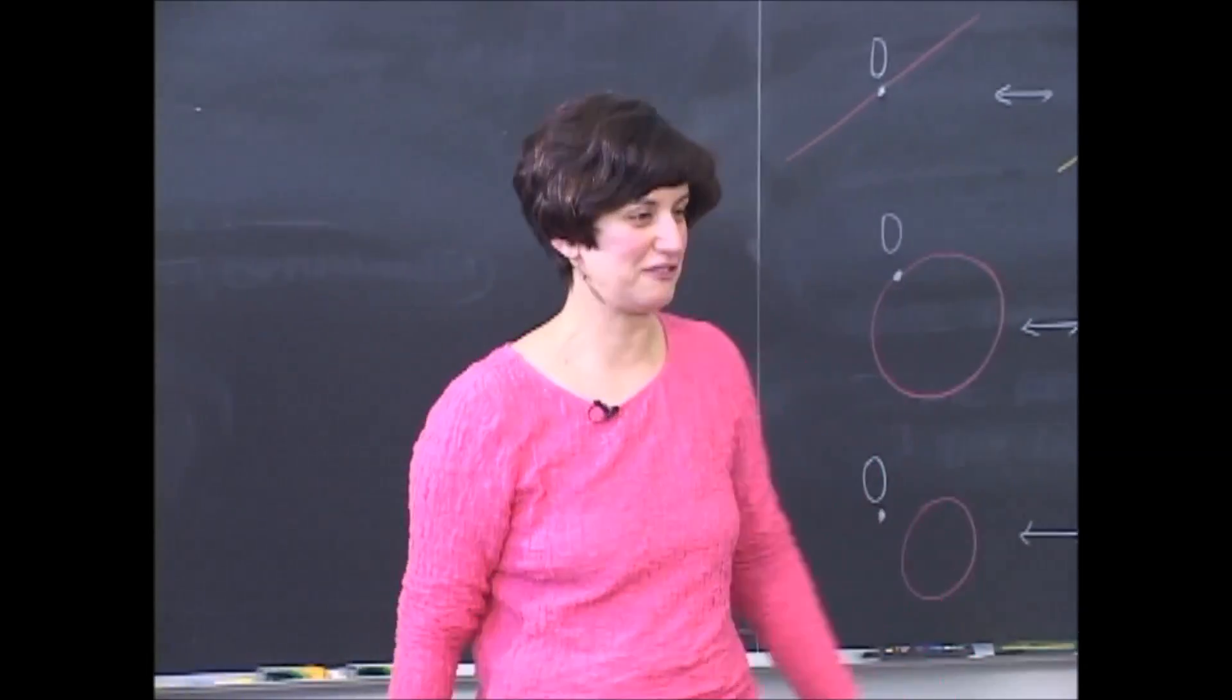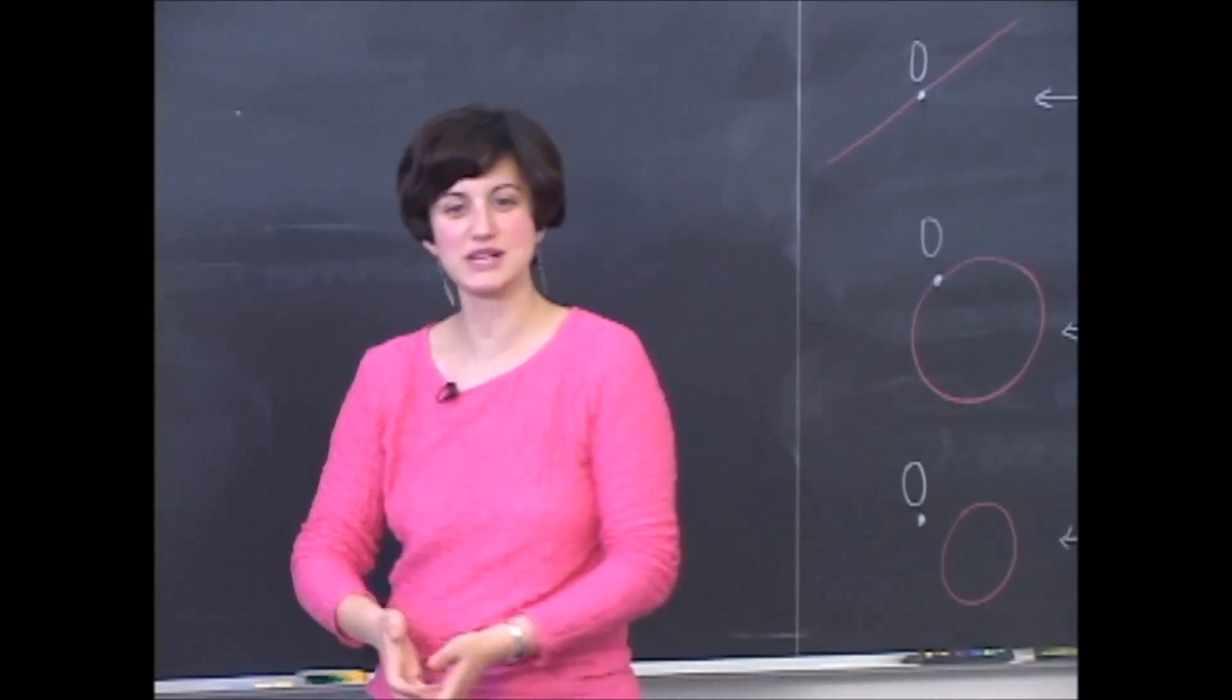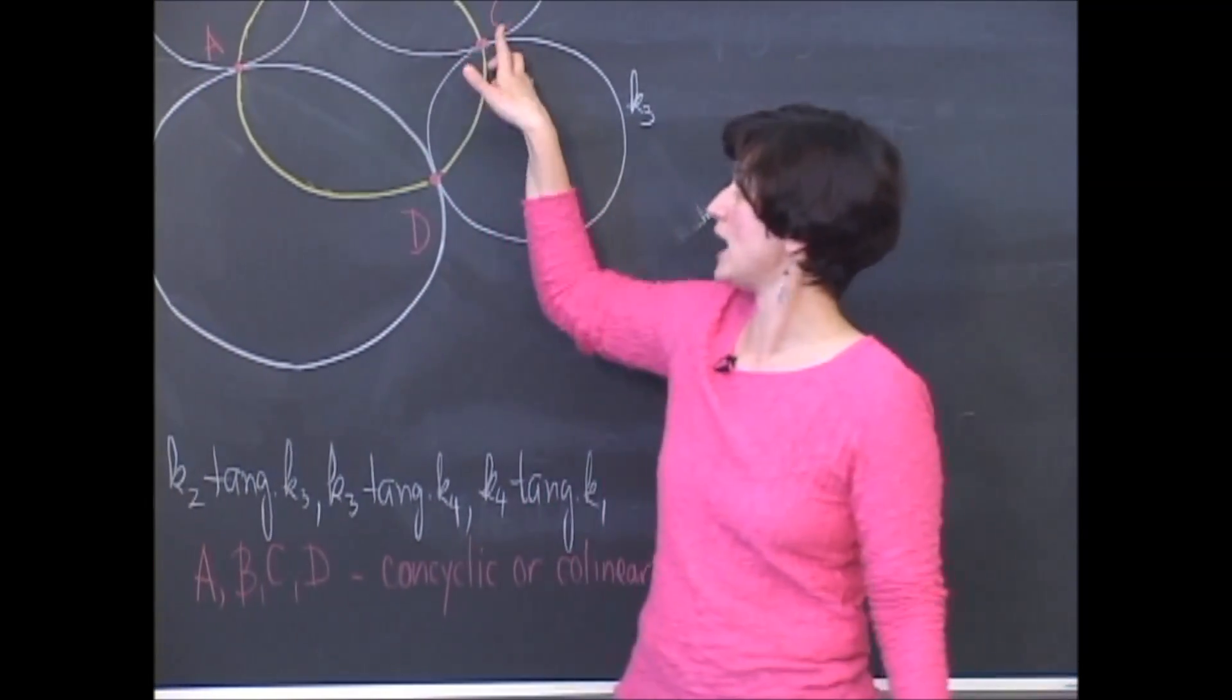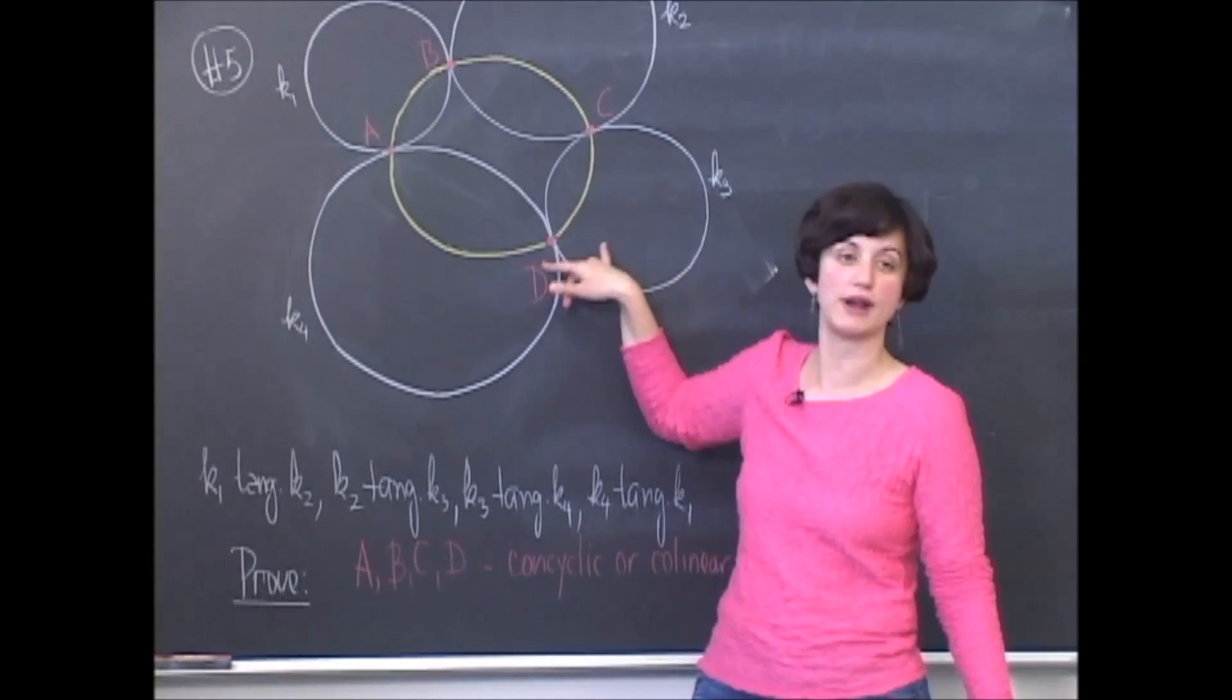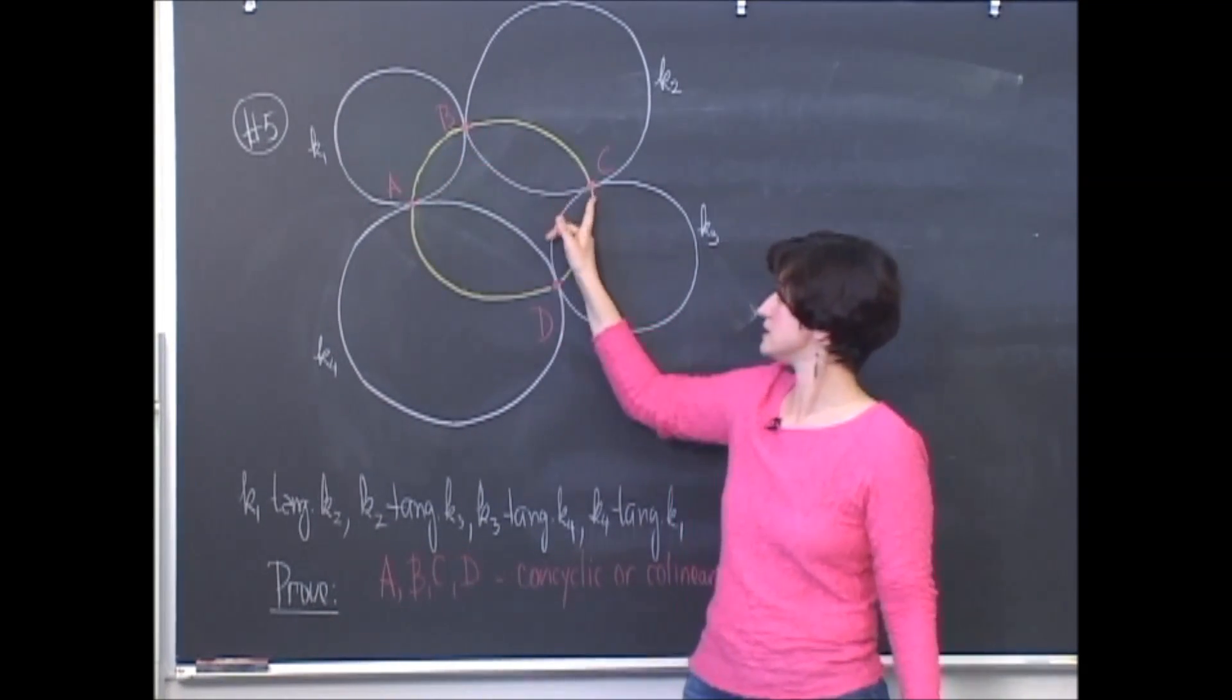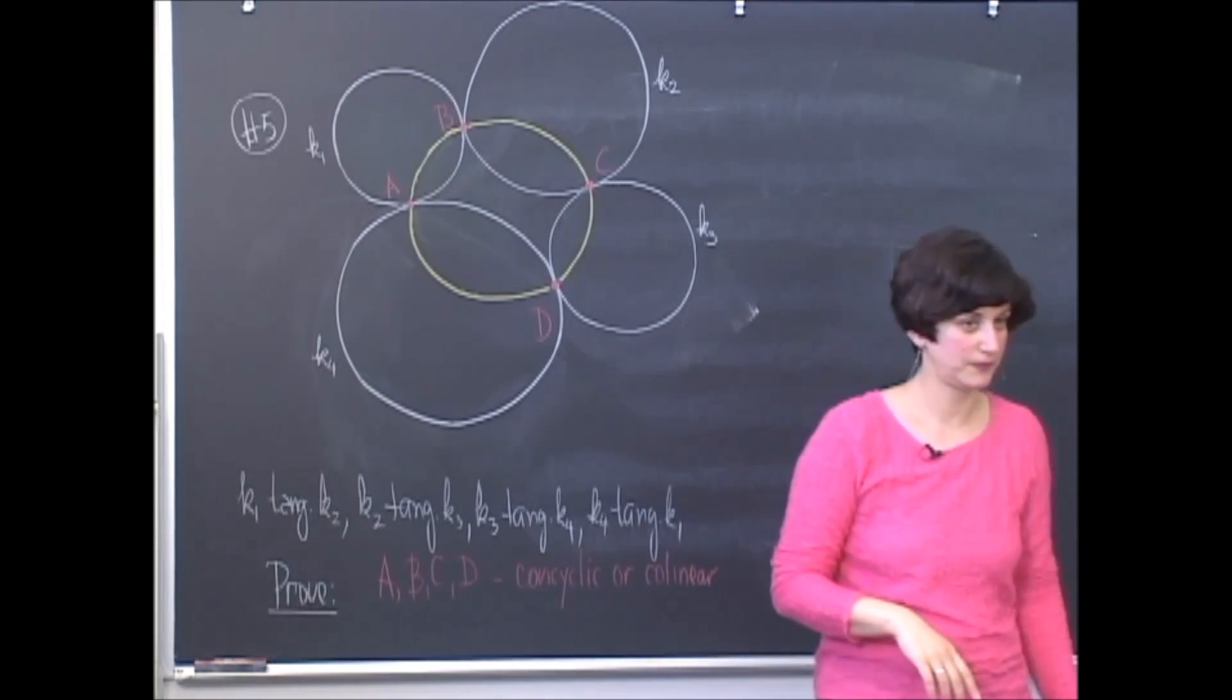Back to problem five. So once again, for the newcomers, the white circles are tangent pairwise to each other as you go around, and the points of tangency are the red points A, B, C, and D.